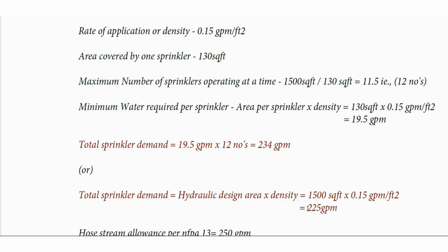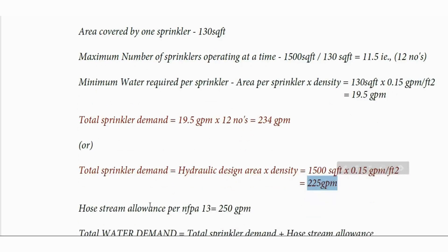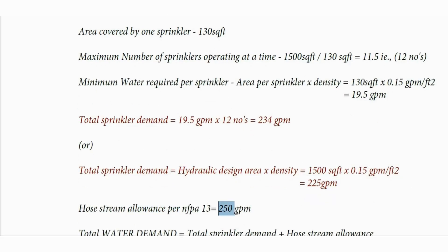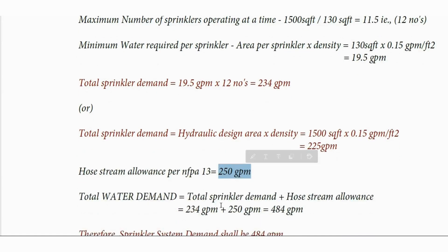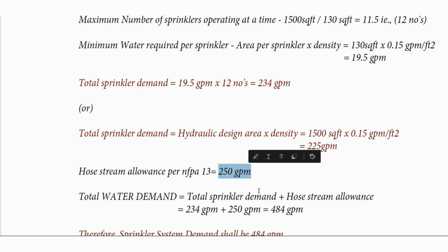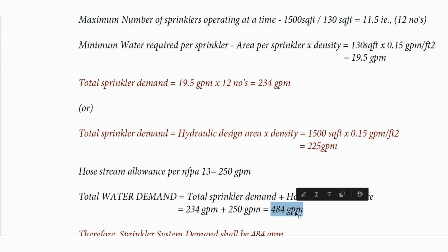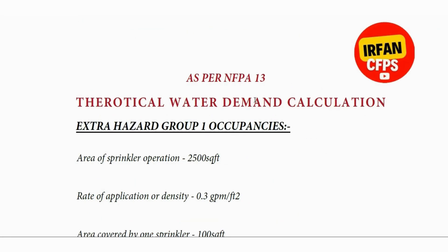Alternatively, from the area-density curves, the formula is hydraulic design area multiplied by density, giving approximately 225 GPM. Since we need to add the hose stream allowance — for ordinary hazard per NFPA 13, that is 250 GPM — we add 234 GPM sprinkler demand to 250 GPM hose allowance, giving a total water demand of 484 GPM.